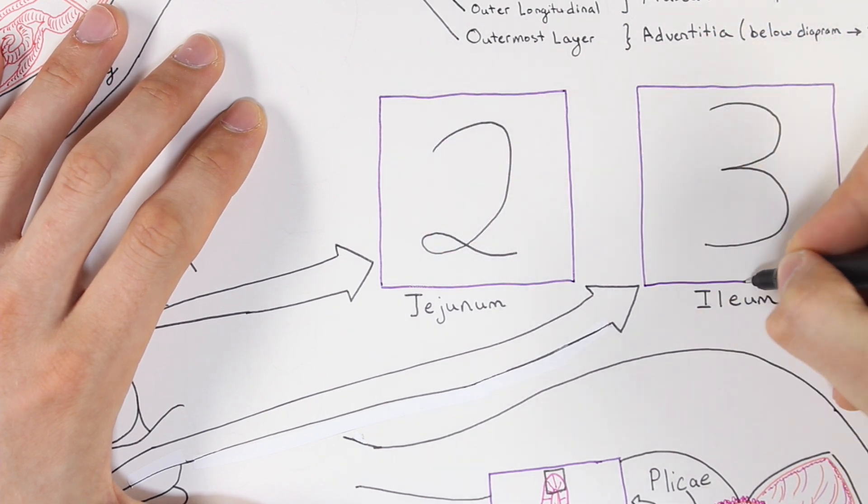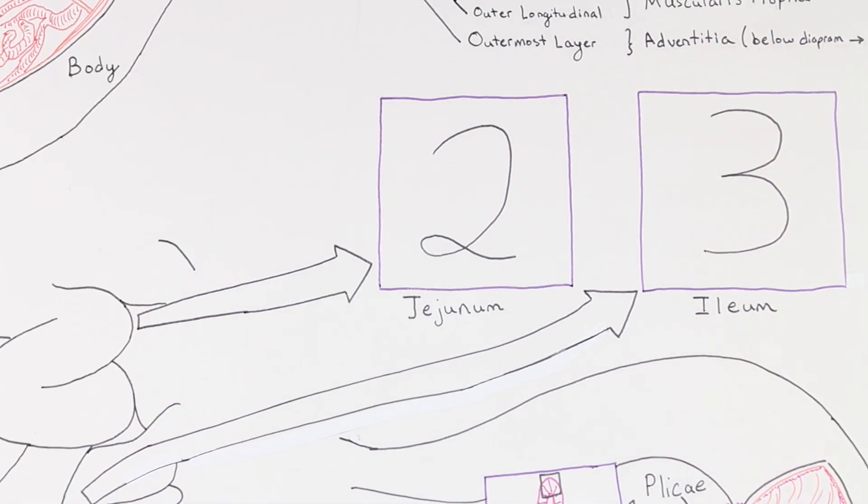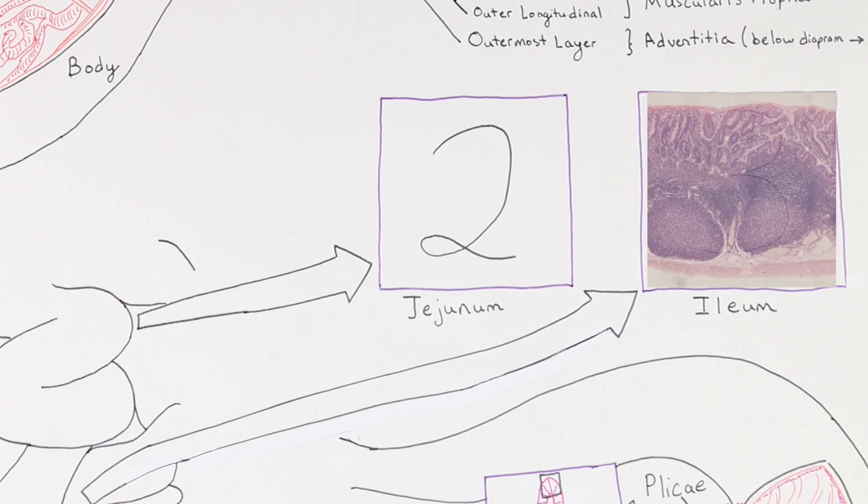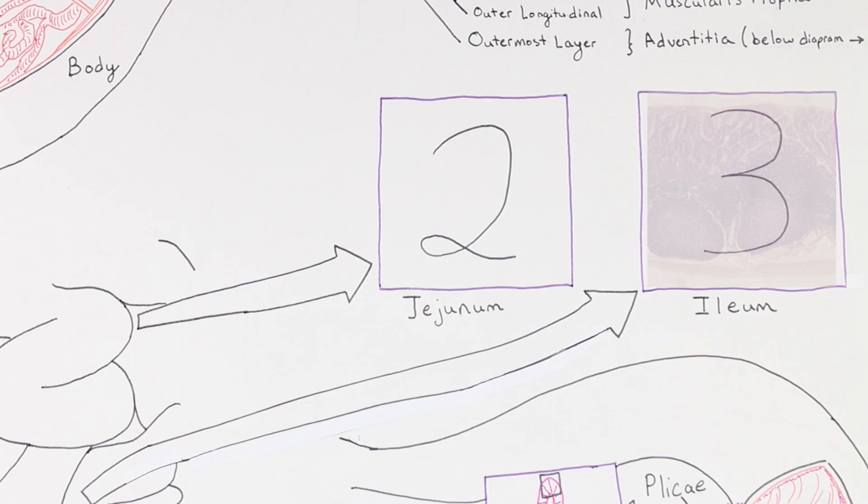The ileum is the final part of the small intestine and has Peyer's patches in its submucosal layer as seen here. Peyer's patches are immune system-associated lymphoid tissue, and are sometimes called MALT, which is mucosa-associated lymphoid tissue. As a quick reminder, Peyer's patches contain M cells that sample antigens in the lumen and pass them to antigen-presenting cells found within the intestinal wall.